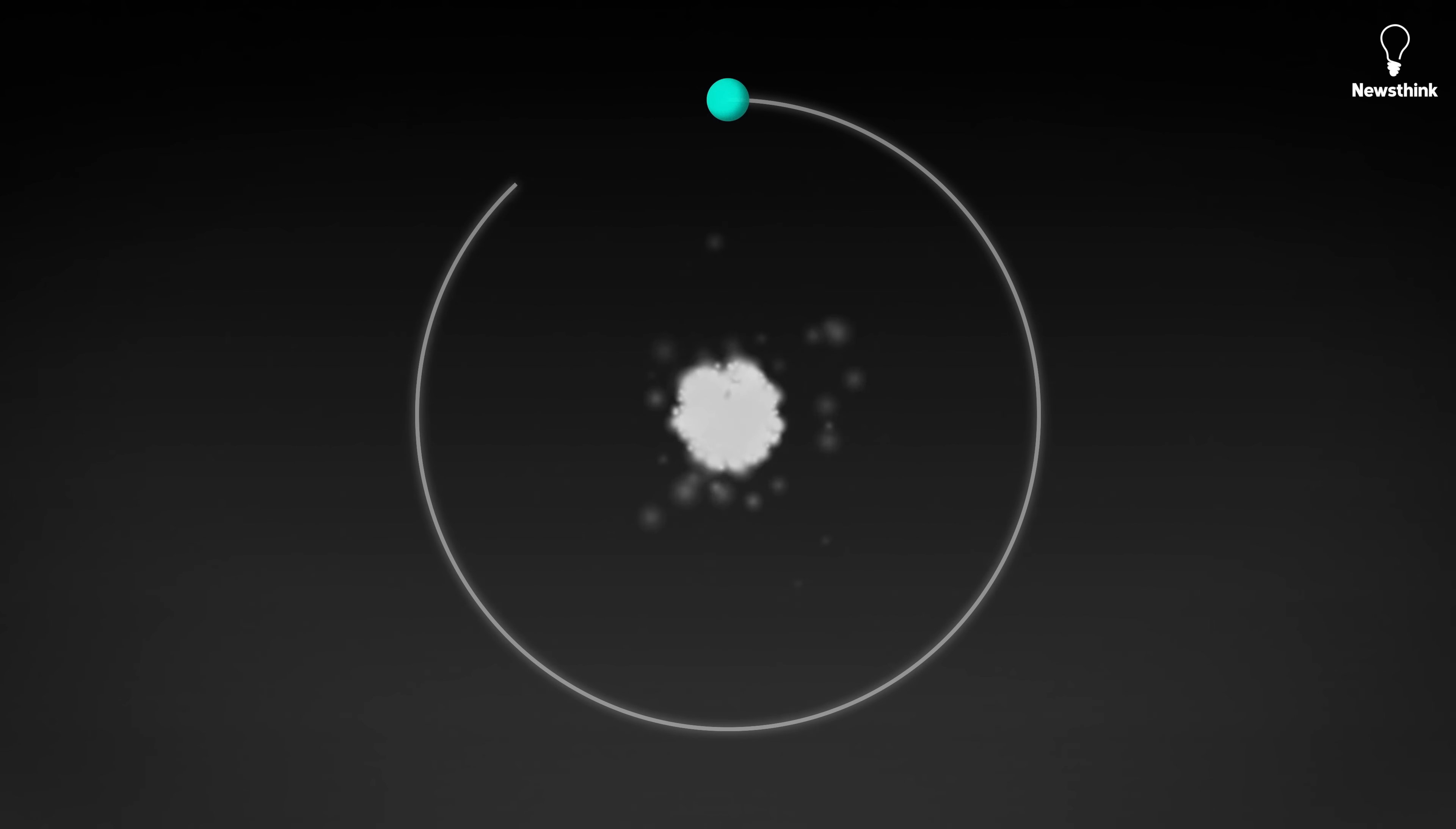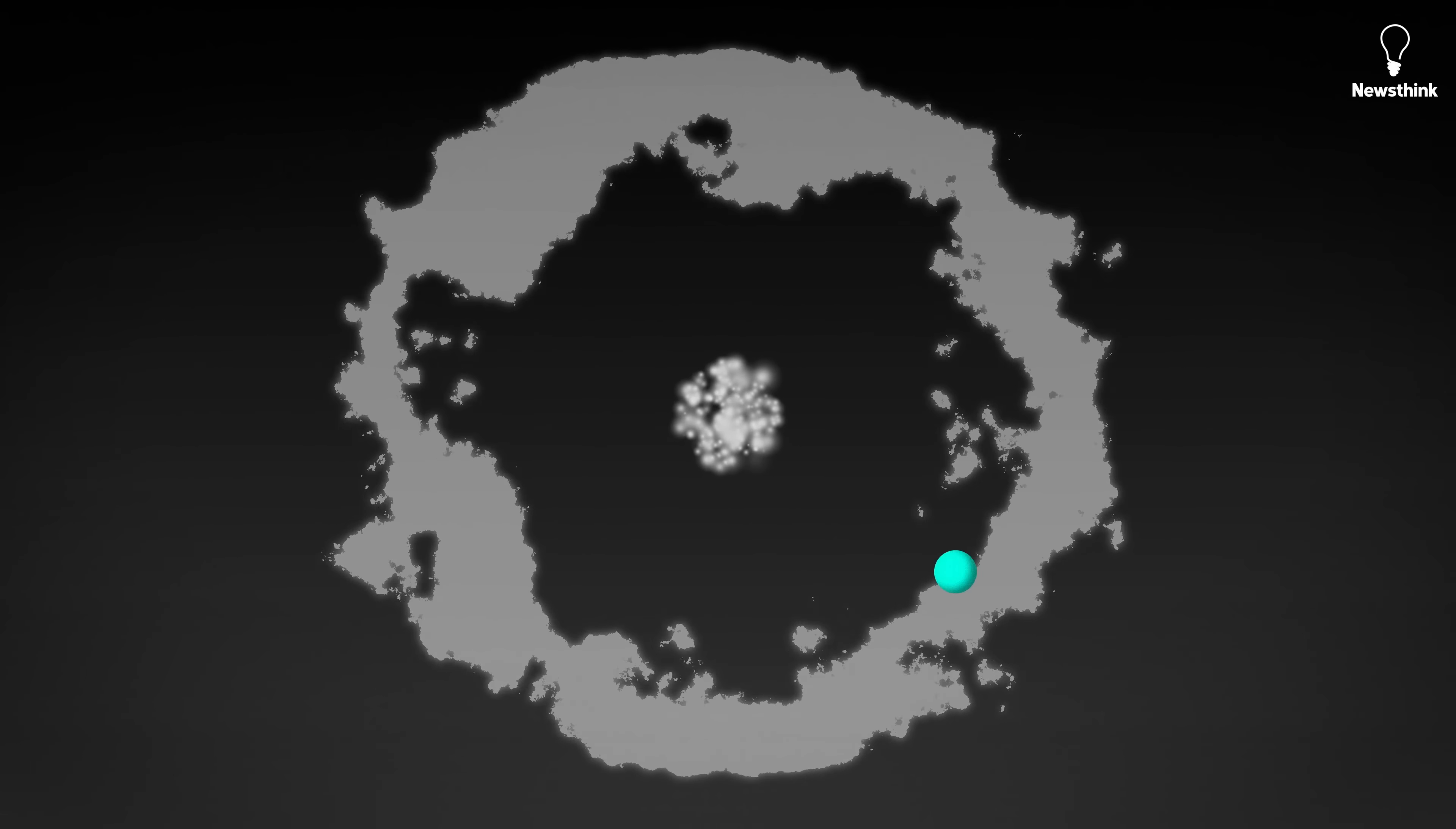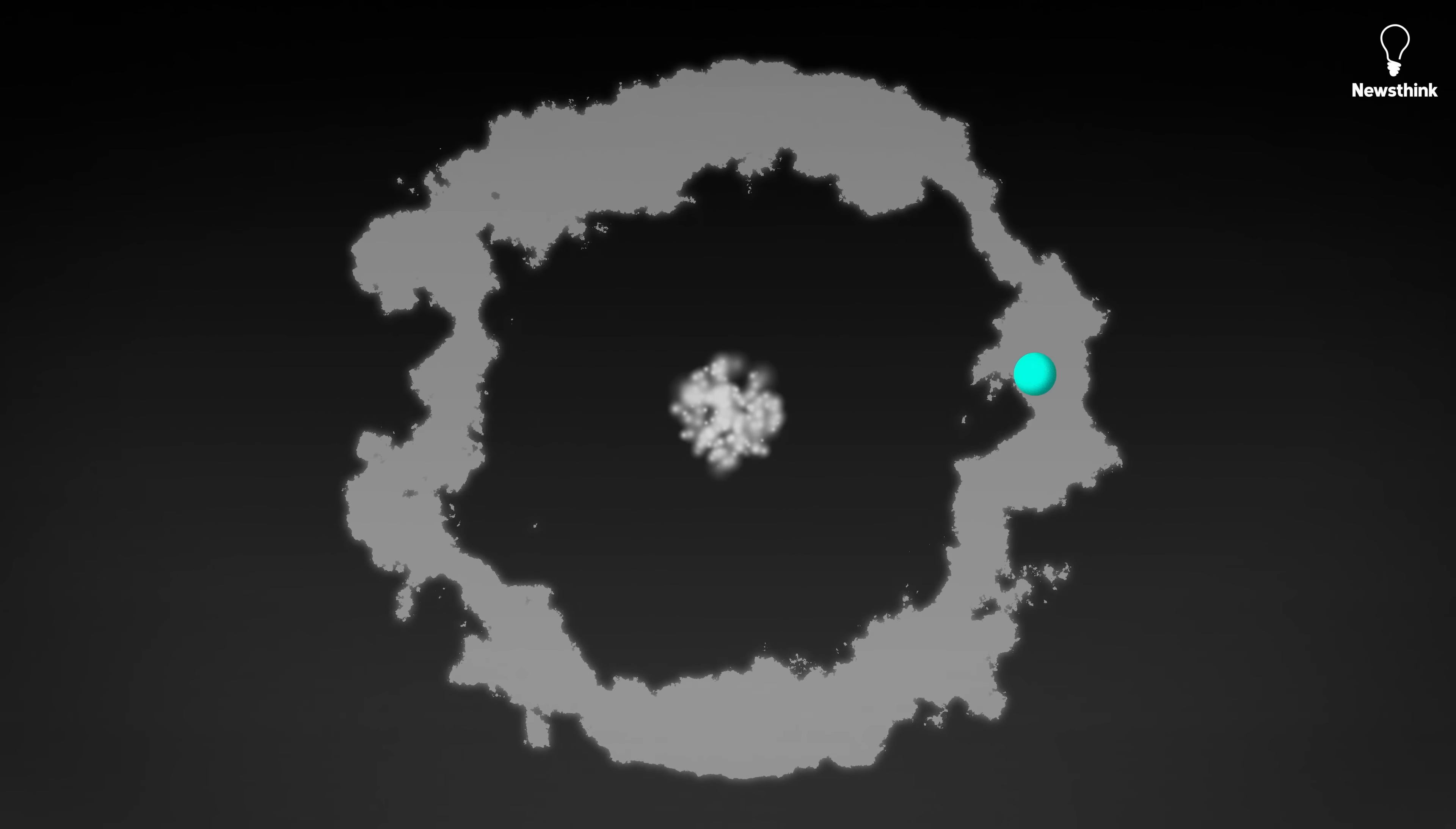Take an electron. It isn't a tiny planet orbiting the sun on a precise path. Instead, quantum mechanics revealed it as a cloud of probability. You can only predict the chance of finding it in a certain region, never its exact path.